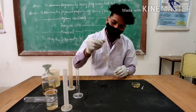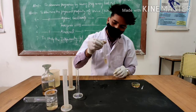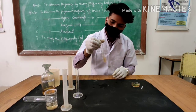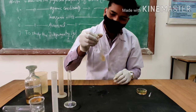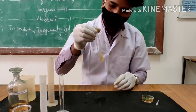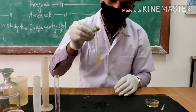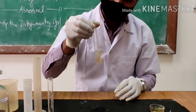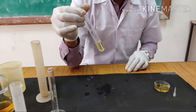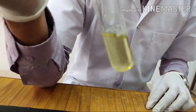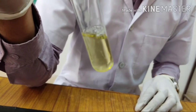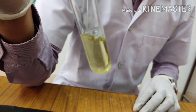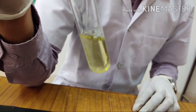After adding all 3 constituents, reddish-yellow colour or ruby red colour should be observed, which will confirm the presence of creatinine. A yellow colour was observed, which confirms the presence of creatinine in the given urine sample.